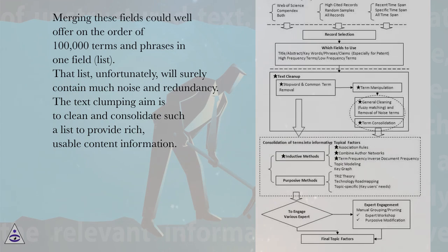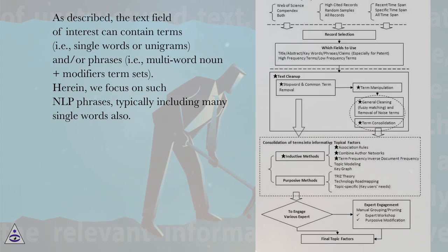That list, unfortunately, will surely contain much noise and redundancy. The text-clumping aim is to clean and consolidate such a list to provide rich, usable content information.